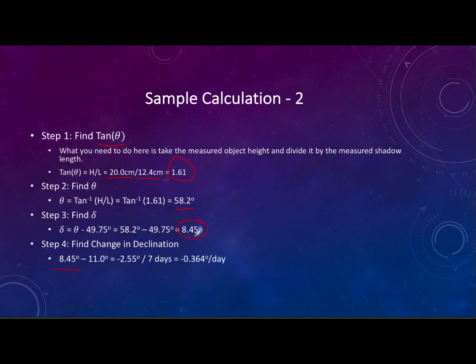Now we can find the change in declination. You always take the current value, the one you just got, 8.45 in this case, subtract the previous one that we calculated on the previous slide which was 11. That gives you negative 2.55 degrees. That's how much the declination changed over the course of that week. However while my observations are all uniformly spread out at seven days yours will not be. So you always divide by the number of days between the observations. So in this case you'd take that negative 2.55, divide it by seven and you would get negative 0.364 degrees per day.